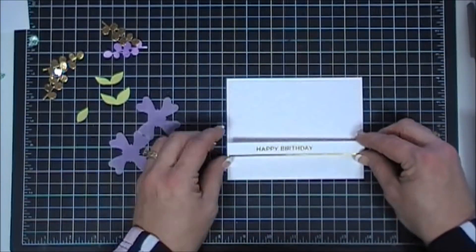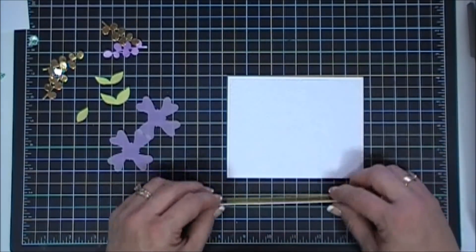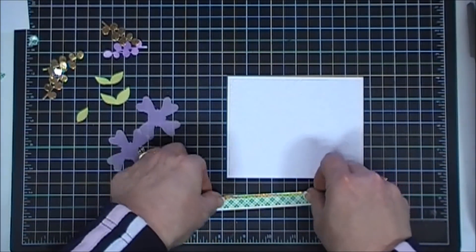Now after that's adhered, we're going to figure out our placement. I'm going to add some foam tape behind my sentiment. We're going to make a landscape style card to go with our sentiment.